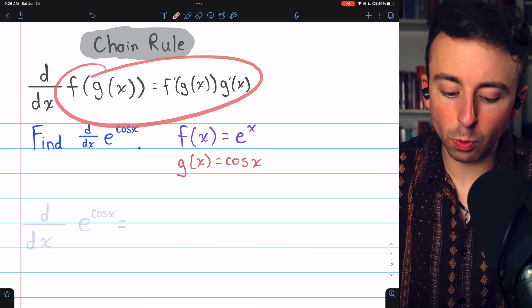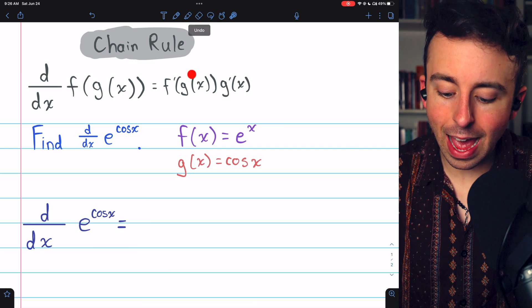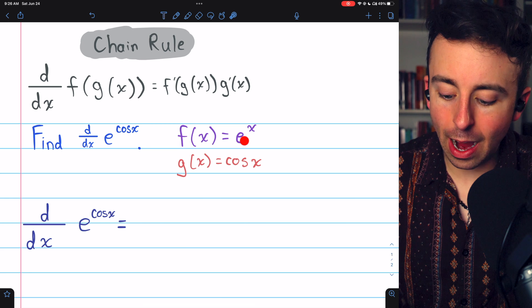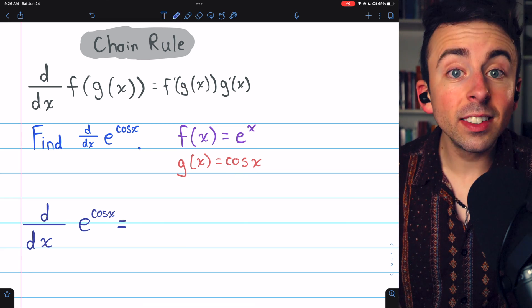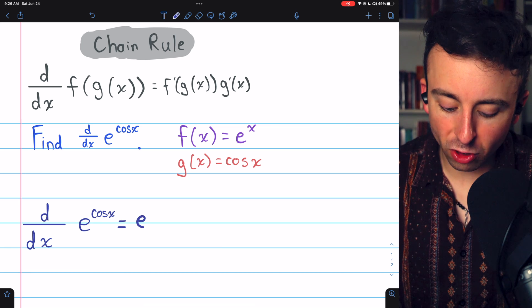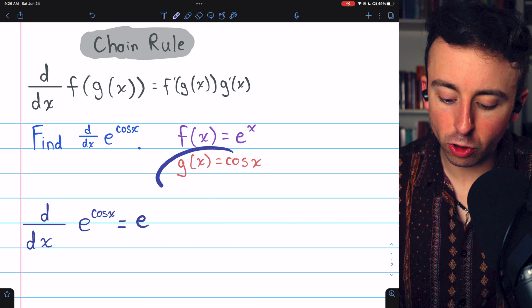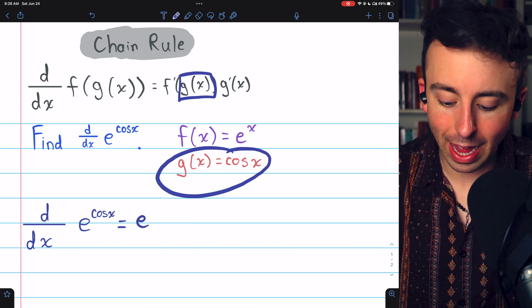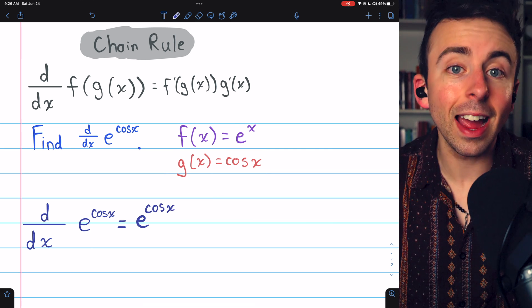Now we can apply the chain rule. The derivative of e to the cosine x is going to be f prime of g of x, so the derivative of the outside function evaluated at the inside. The derivative of e to the x is just e to the x, but remember, it's not x we want in this function, but rather g of x, right? Because it's f prime of g of x. So we just plug g of x in there. It's e to the cosine x.